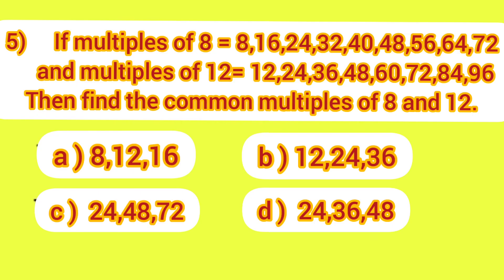Our fifth question is: if multiples of 8 are 8, 16, 24, 32, 40, 48, 56, 64, 72 and multiples of 12 are 12, 24, 36, 48, 60, 72, 84, 96, then find the common multiples of 8 and 12.